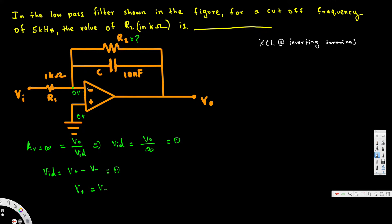The inverting terminal is the negative terminal and the non-inverting is the positive terminal. Applying KCL at the inverting terminal: KCL states that the sum of all currents through a node equals zero. From that we derive: (0 minus Vi) divided by R1, plus (0 minus Vo) divided by the impedance — but here we have a capacitance, so we convert it to the Laplace domain to get an impedance of 1 over sC.